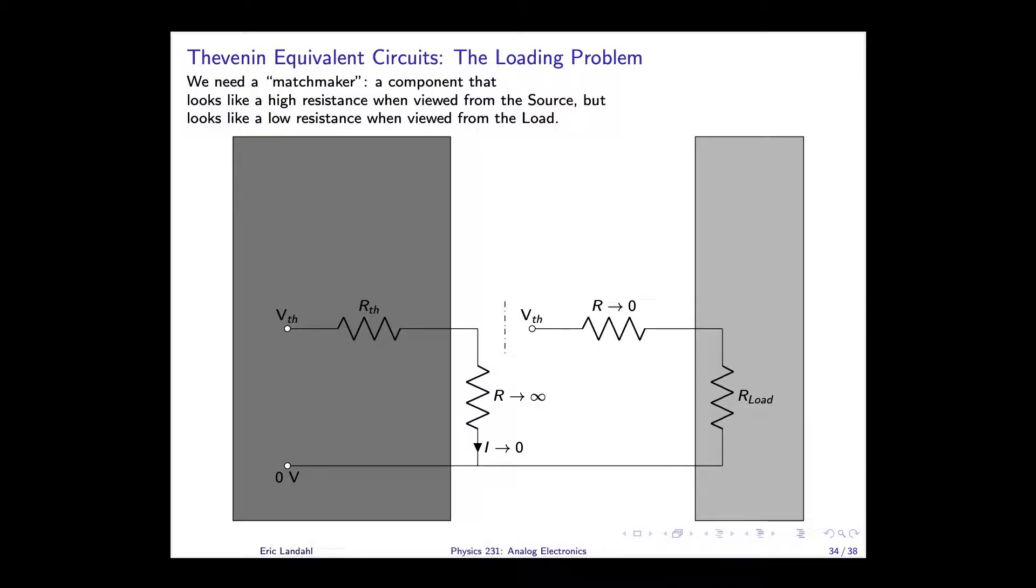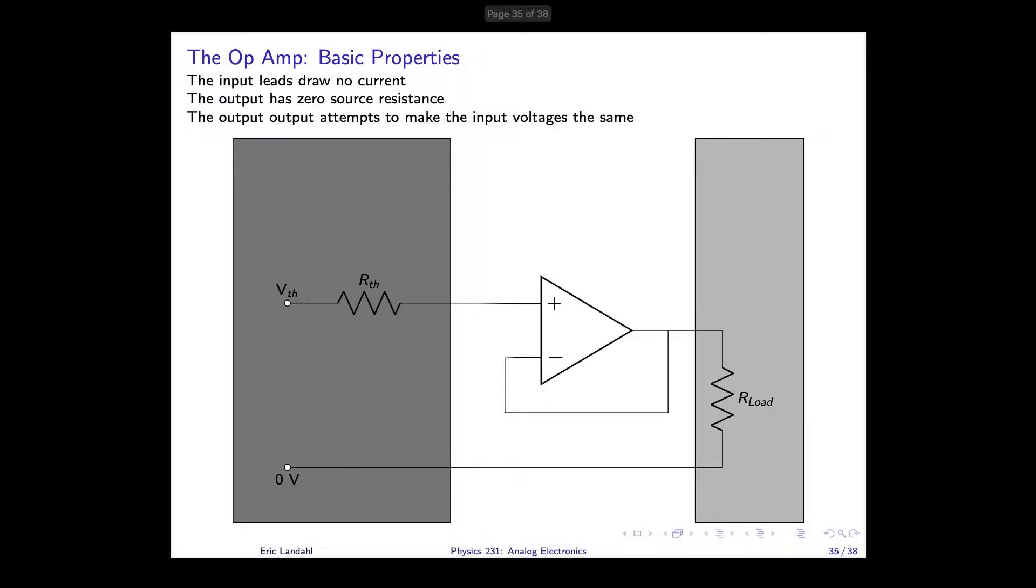Such matchmaker does exist, and its name is the op amp, or operational amplifier. And listed here are the three golden rules of the op amp. Now these are idealized op amps, and real world devices will not quite follow all these rules precisely. But these are the basic rules we use in designing and understanding how op amps work.